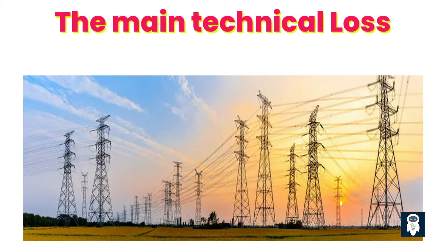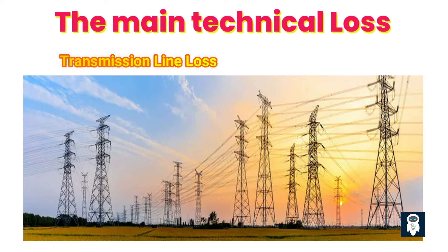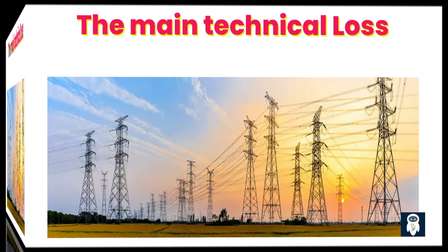Transmission line losses are mainly caused by the resistance of power lines and the magnetic fields created around them. As electricity flows through the lines, a portion of it is dissipated as heat. To minimize these losses, power companies can use materials with lower resistance, optimize the line design, and employ voltage regulation techniques.